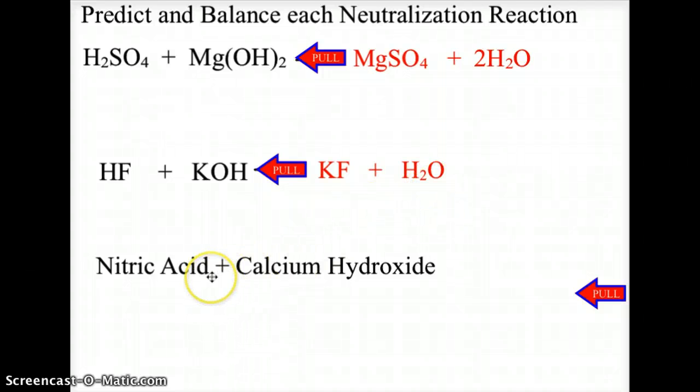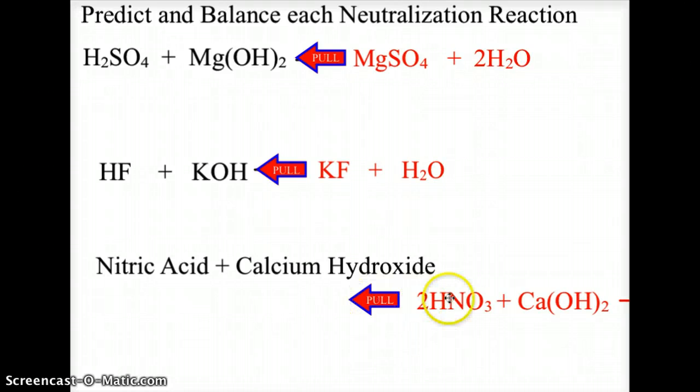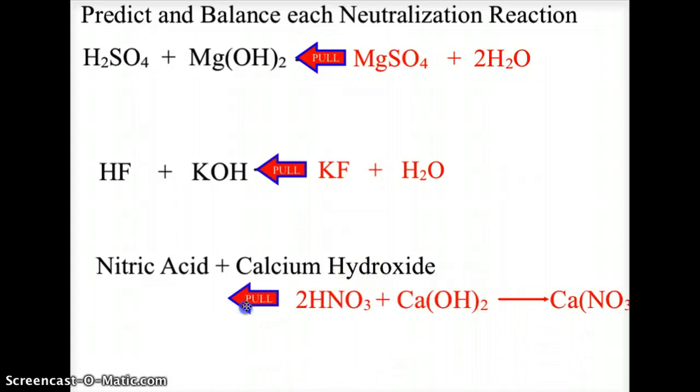In the case of nitric acid, the formula for nitric acid is HNO3, and calcium hydroxide is Ca(OH)2. And when these recombine, we will get calcium combining with the nitrate, and we will get the hydrogen from the acid joining the hydroxide from the base to give us water.